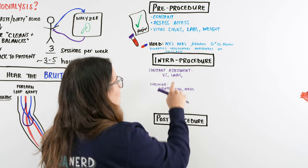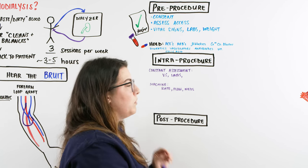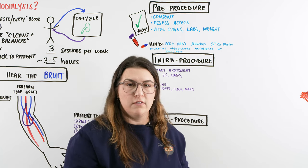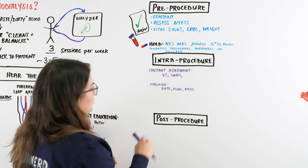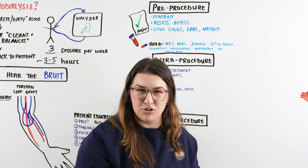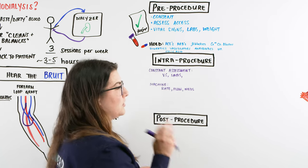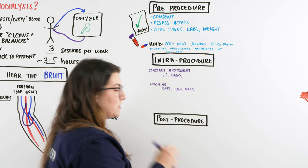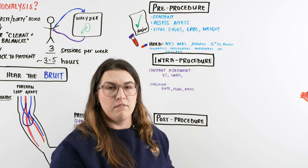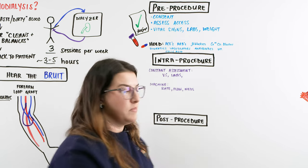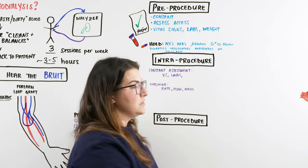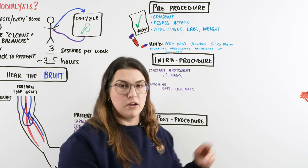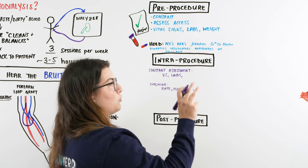During continuous patient assessment, especially for a first dialysis treatment, teach the patient what symptoms to report: headache, nausea, dizziness, faintness, or muscle cramping. We want to catch these early so we can monitor and treat before things get worse. Give medications if needed, and keep on top of those warning signs.